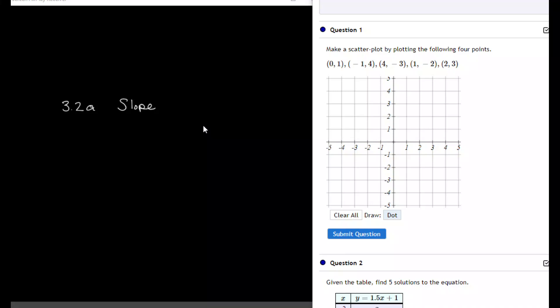We're going to start with 3.2, which is slope for today. The first question is how to make a scatter plot. A scatter plot just means it may or may not have any recognizable shape, just any plots with no necessary relationship to each other. Could have one, but not necessarily.